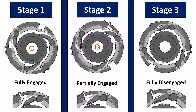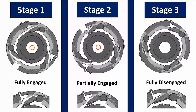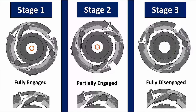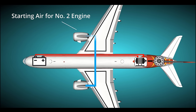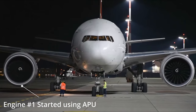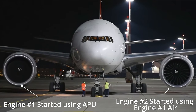This disconnects the air turbine starter from the engine and the air turbine starter shuts off. Now we've got the first engine up and running. We need to get the second engine started. The exact same process is followed, except instead of using the APU to feed the air turbine starter for the second engine, we use air from the first engine.